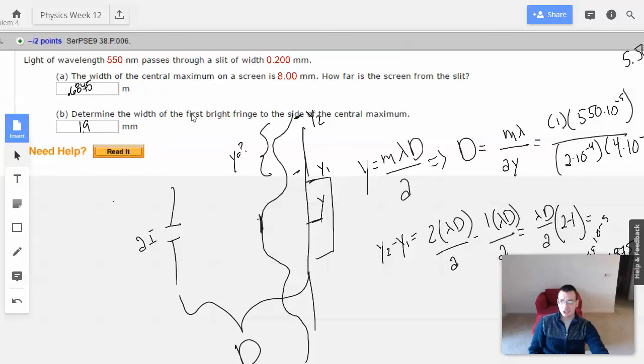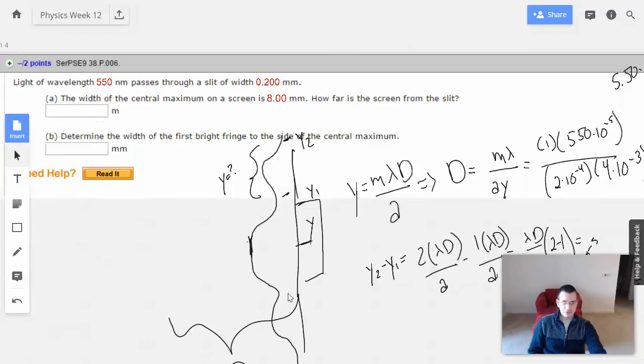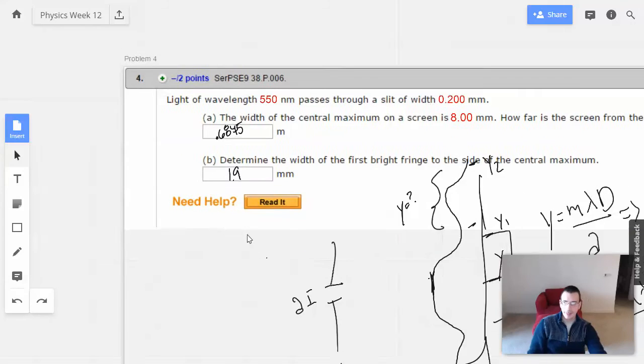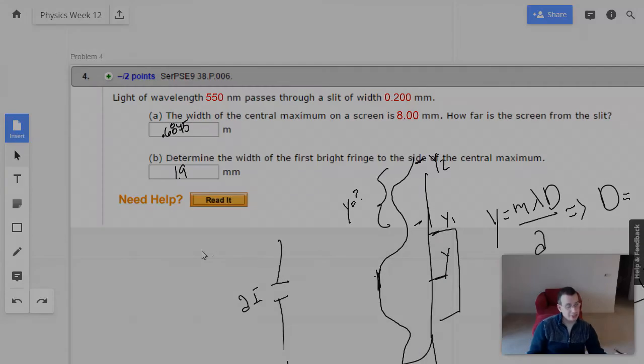And on the second portion, we have to find the width of the first bright fringe to the side of the central maximum, so this guy right here. So we find the distance to the second dark spot, we find the distance to the first dark spot, and we subtract the two from each other. And that gives us our 1.9 millimeters. So not too bad. And see you on number five.